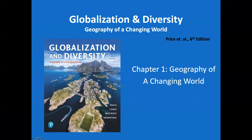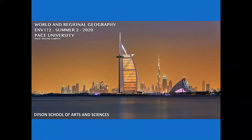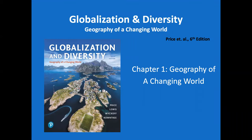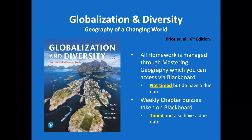You'll see an image of Dubai at the beginning — this is the summer 2020 PACE online campus, part of the Dyson School of Arts and Sciences. The textbook is 'Globalization and Diversity: Geography of a Changing World,' sixth edition. You're taking advantage of the ebook, and the MyLab and Mastering for homeworks and quizzes are handled through Blackboard electronically. All homework is managed through Mastering Geography, accessed through Blackboard. It is not timed, but it has a due date — usually Thursday night by midnight. Weekly chapter quizzes are taken on Blackboard and are indeed timed events, so whenever you start a quiz, a clock is running.